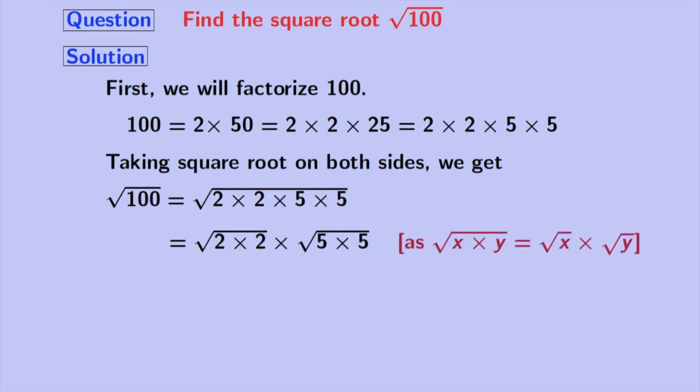As we know that square root of x times y is equal to square root of x times square root of y. Here, x is 2 times 2 and y is 5 times 5.